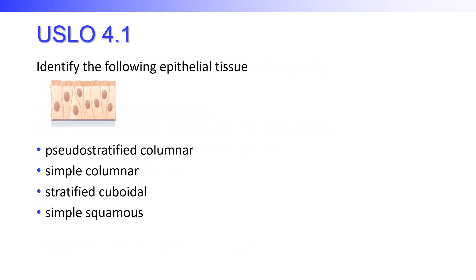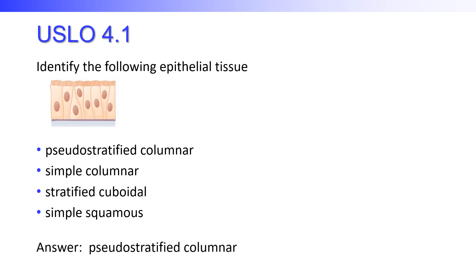Identify the following epithelial tissue. Looking at the image, our cells are taller than they are wide, and the nuclei are all over the place. So we know they are columnar, and because of the scattered nuclear distribution, that makes this tissue type pseudostratified — giving the appearance of being stratified when it's not.